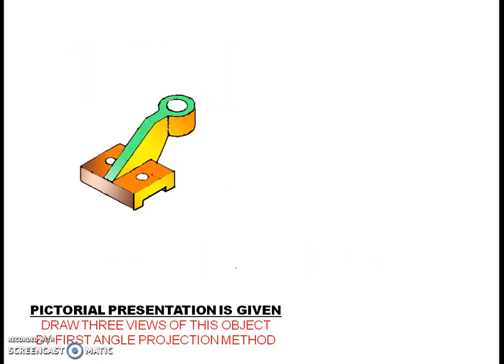Here, we are given a pictorial representation and we have to draw the three views of the object. Three views means top view, front view and the side view, by the first angle projection method.